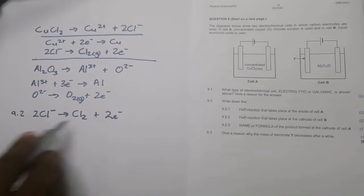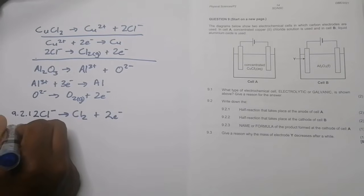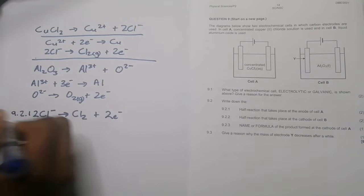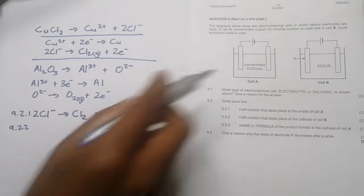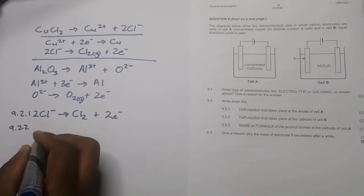And 9.2.2, they say the half reaction that takes place at the cathode. So that would mean that's the negative part of cell B. Remember, at the cathode that is where reduction takes place.